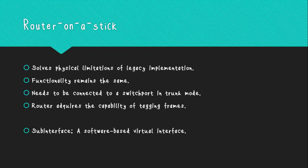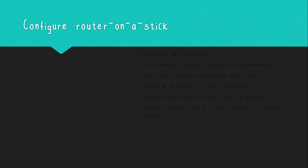To configure router on a stick, the first step is to issue the 'switchport mode trunk' command on the switch port that is directly connected to the router. It is important to remember that a router does not support dynamic trunking protocol, which means you cannot use the 'switchport mode dynamic auto' or 'switchport mode dynamic desirable' commands on the switch port directly connected to the router. The switch port connected to the router does not necessarily need to have a VLAN assigned.